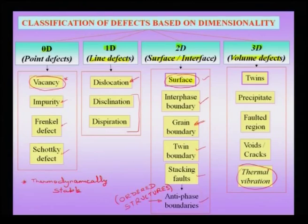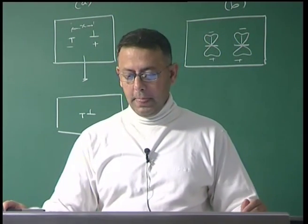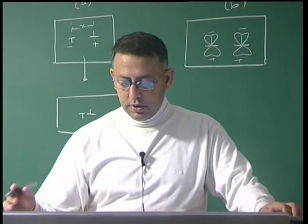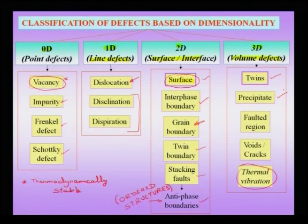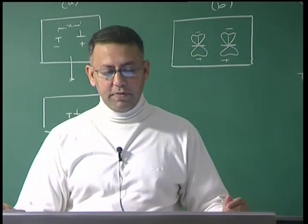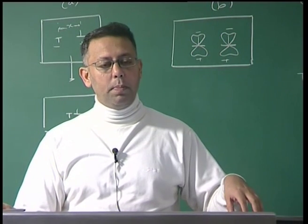Three-dimensional or volume defects include a twin bounded between twin boundaries, a precipitate as a second-phase region sitting in a matrix, and faulted regions bounded by stacking faults. A precipitate represents a disruption in the order of the parent or matrix crystal and can be thought of as a defect in the parent crystal. Far from being merely unwanted, precipitates can actually play a very important role in engineering the properties of a material.